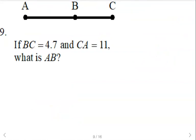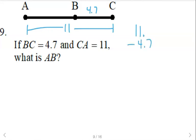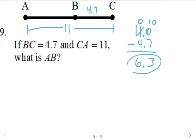We're told that BC is 4.7 and CA is 11. So we can do 11 minus 4.7. If you're not using a calculator, you'll want to add a zero in the tenths place — 0 minus 7, we'd have to borrow. 10 minus 7 is 3, 10 minus 4 is 6, so 6.3 is the distance from A to B.